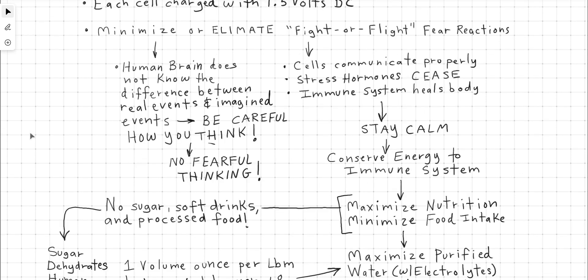If we minimize or eliminate the fight or flight reactions when not necessary, then the cells communicate properly, stress hormones cease, and then the immune system gets all the energy to heal the body and maintain the meiosis and the cell replication. So this requires staying calm. This is where we conserve energy to the immune system. This is maximized through nutrition. And we can maximize this process through minimizing food intake because digestion itself also steals a lot of energy from the immune system.